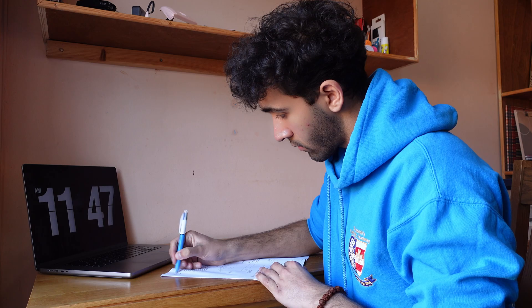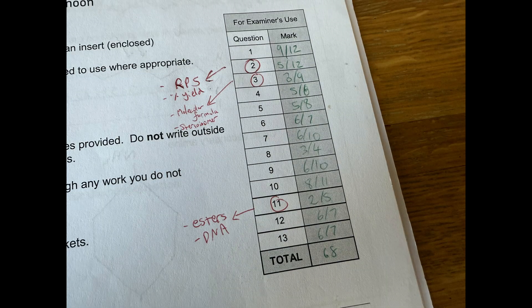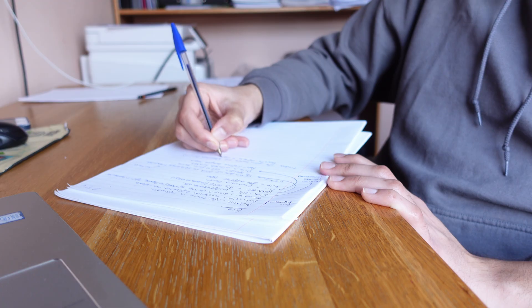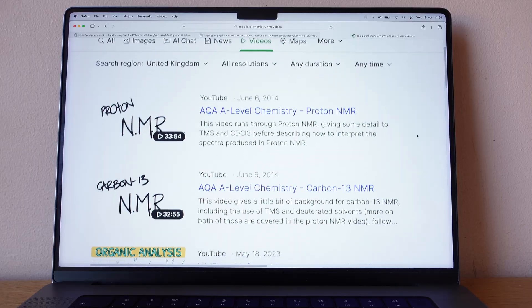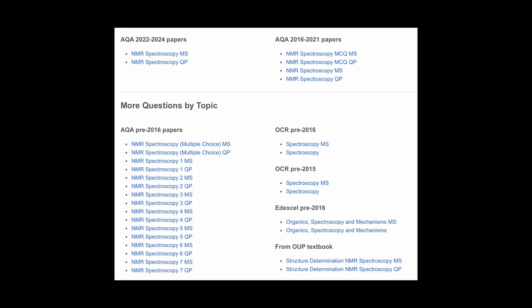Tip 5: After you do a past paper, you want to find the questions you did less well on and then revise the topics the questions were on. So if you did badly in an NMR question, watch videos on NMR and then do more questions specific to NMR.